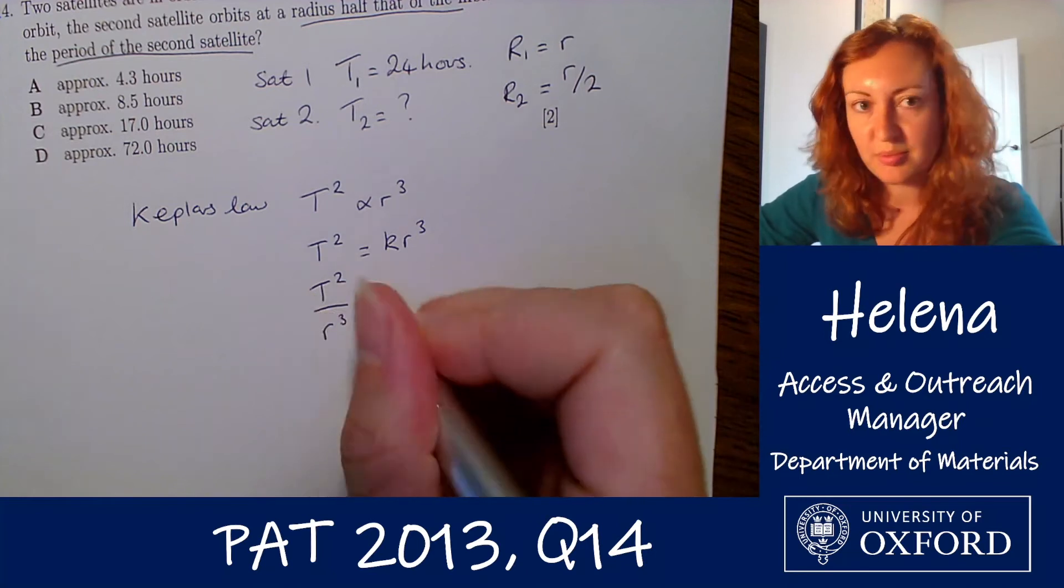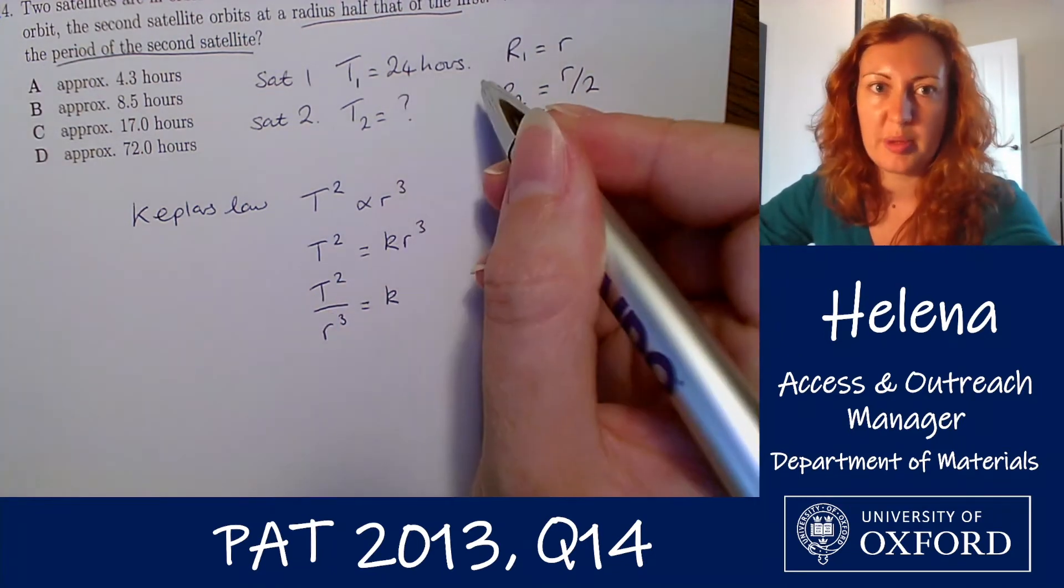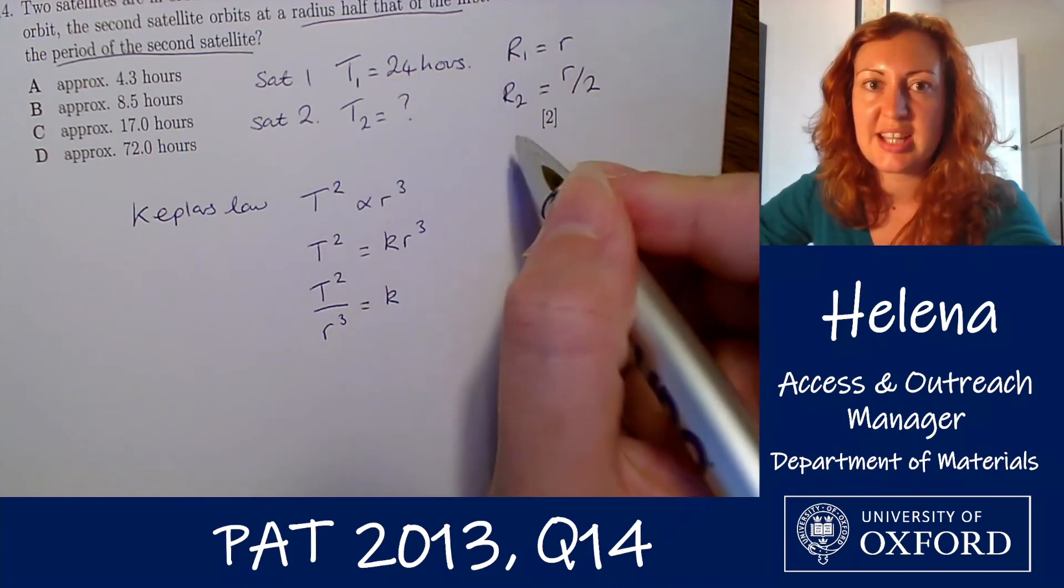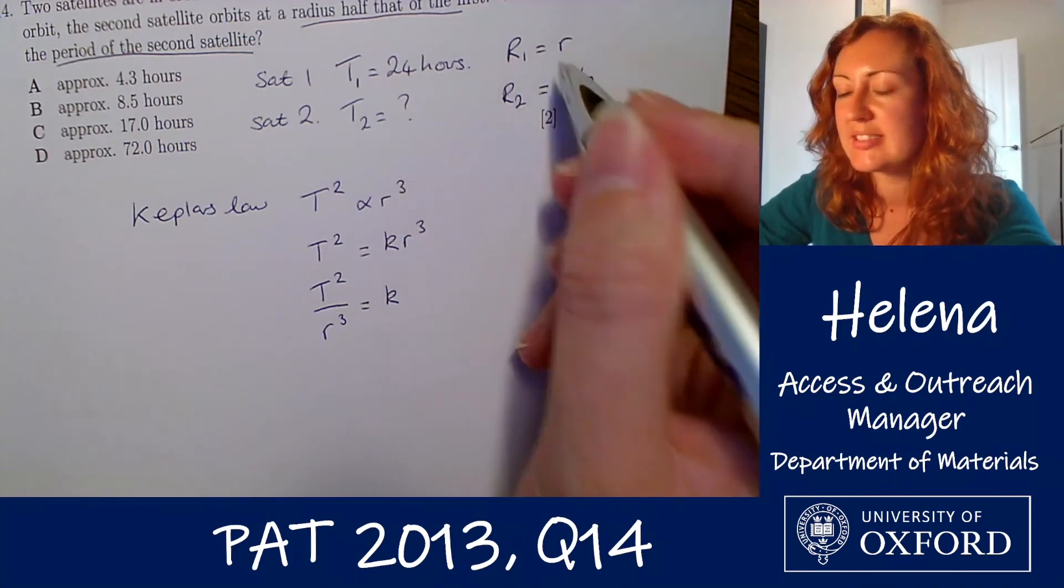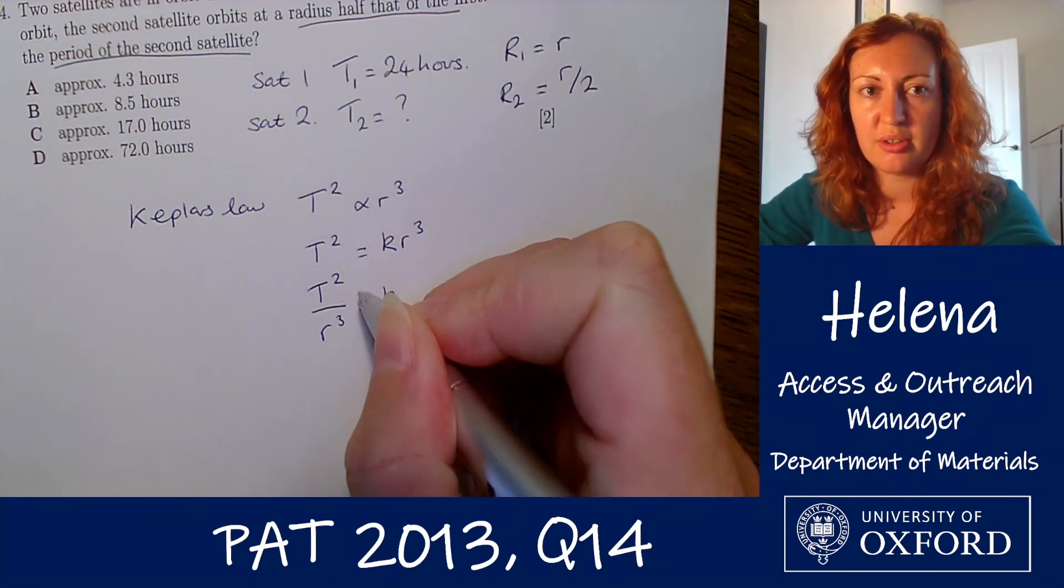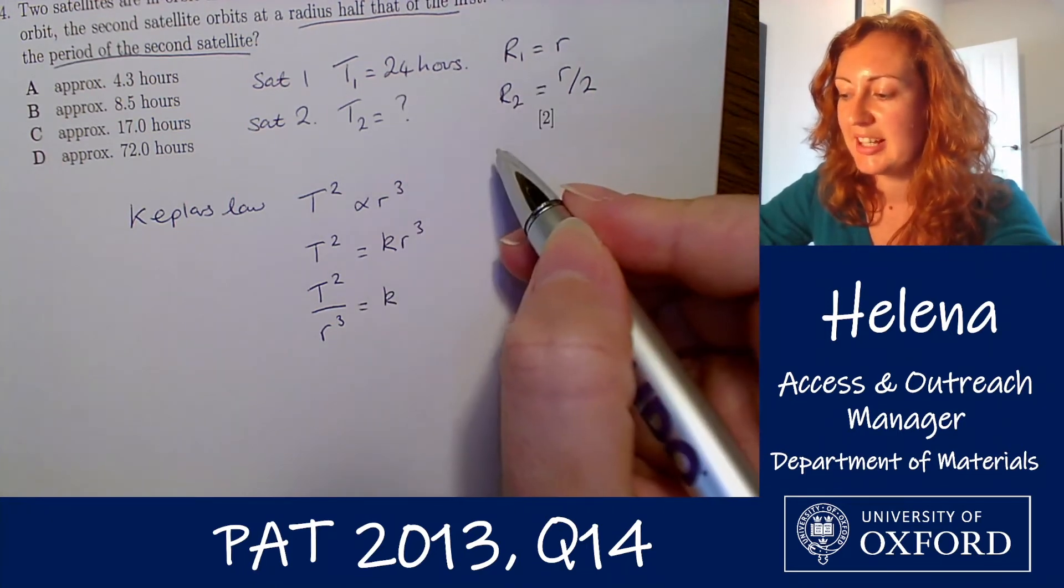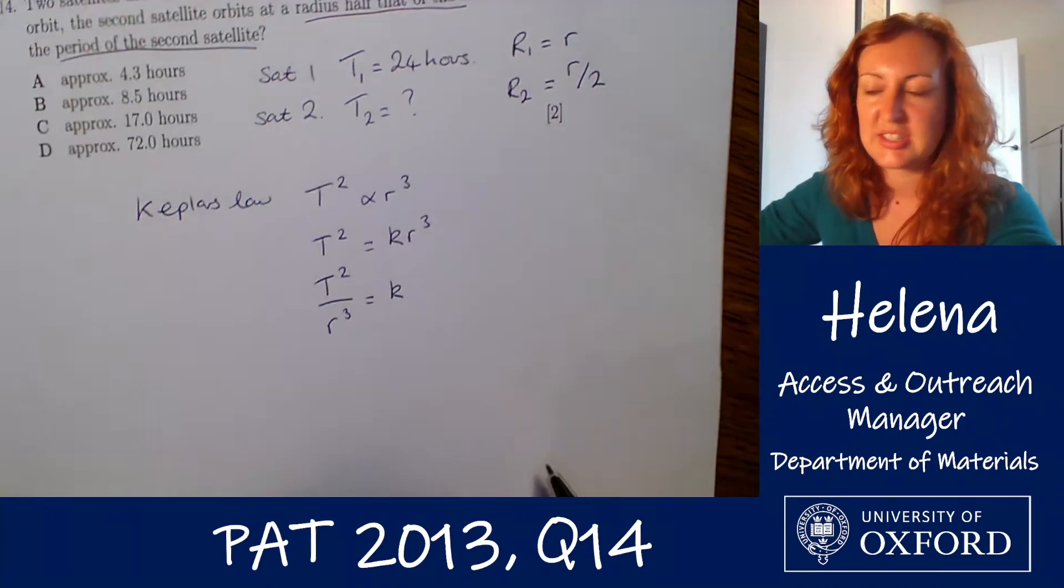Now this ratio here this constant is the same for any orbit so both of these two satellites even though they're at different periods and different radii are going to have this ratio being equal. So this means we can equate this ratio between the two satellites and solve to find our t2 here.